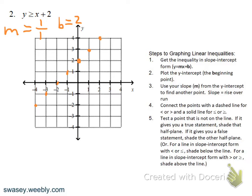Connect the points — dashed line if there's no 'or equal to,' solid line if there is. This one has 'or equal to,' so it's a solid line. Either pick a test point or go based on the inequality symbol. Since it's greater than or equal to, we shade above.